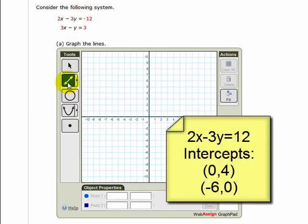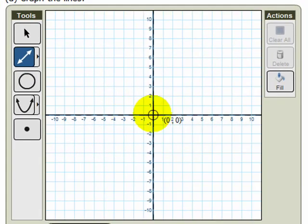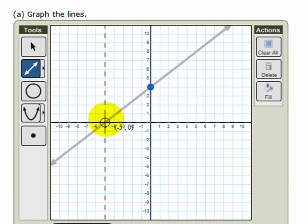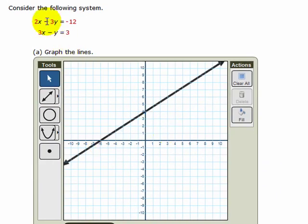So I choose the line tool, and I plot a point at 0, 4, and a point at negative 6, 0. That graphs this first line right here.